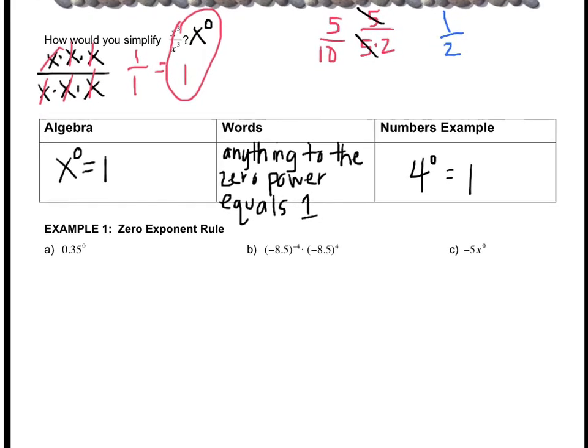Let's check out some examples. 0.35 to the zero—anything to the zero power is one. It doesn't matter what the base is.